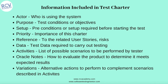The next element is activities — what all activities or possible scenarios you are trying to perform. Then there are oracle notes: how you are going to evaluate the product and whether it meets the expected result. Finally, there is the variation section — any alternative actions that complement the activities described in the activity section. These are the key pieces of information that go into the test charter, which guides exploratory testing sessions.